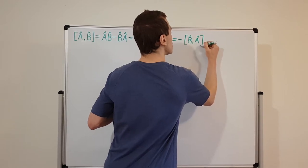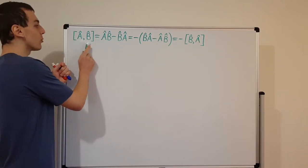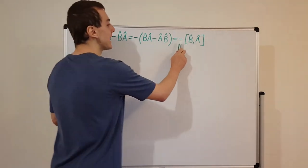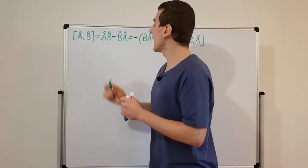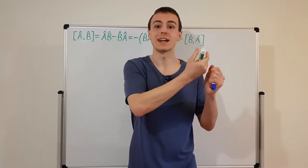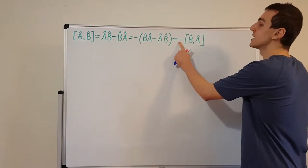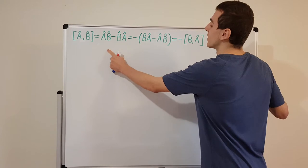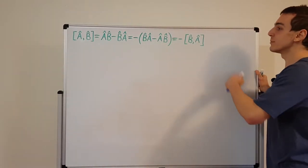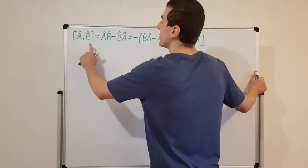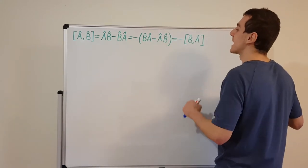This relationship is called anti-symmetry. If there was symmetry, swapping the order would not result in any sign change — AB would be the same as BA. But it's not: a minus sign gets introduced when you factor out and swap the order. There is also a similar relationship called the anti-commutator, which has a plus sign instead of a minus sign, but we're not going to discuss that in this video.